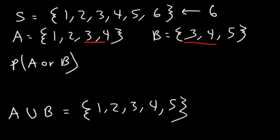So there's five favorable outcomes that lead us to get an event A or B out of a total of six possible outcomes. So the probability is five over six, which as a decimal, that's approximately 0.83. The three is repeating. So that's about 83.3% chance of getting A or B.